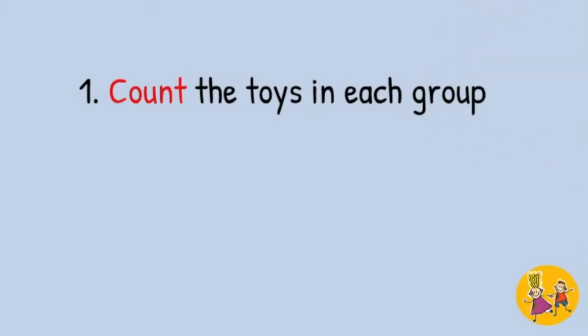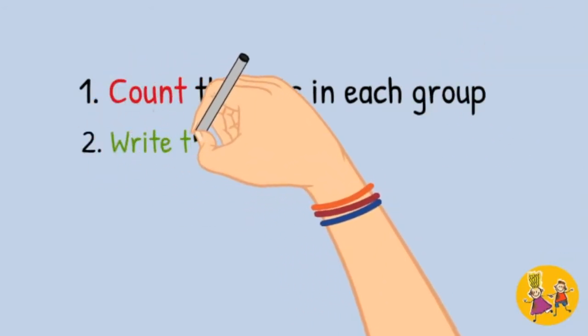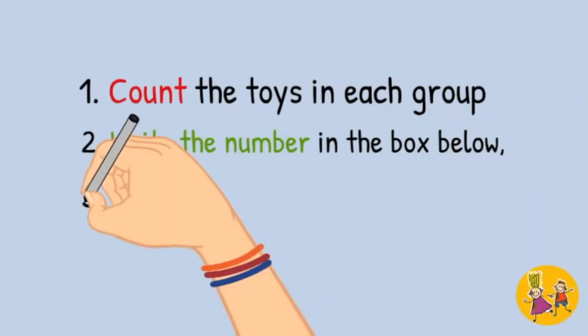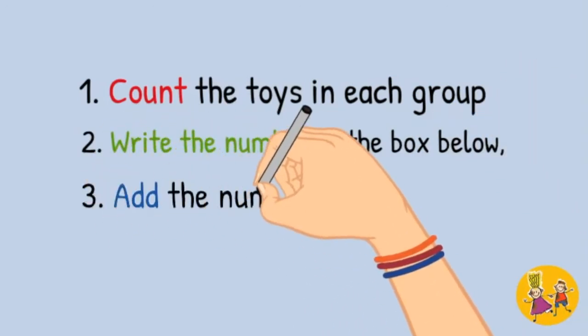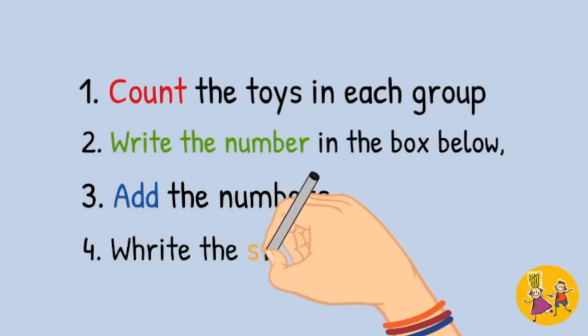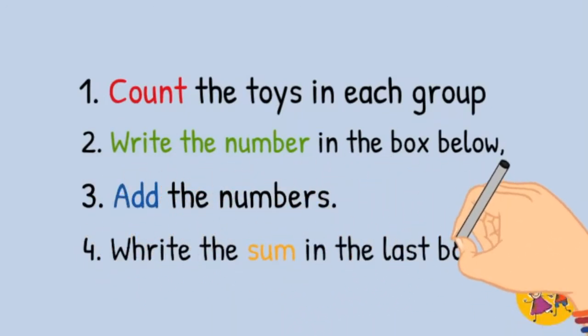Count the toy in each group. Write the number in the box below. Add the numbers. Write the sum in the last box.